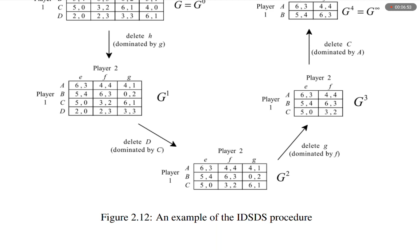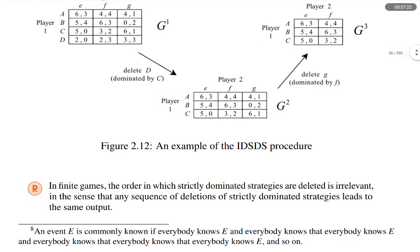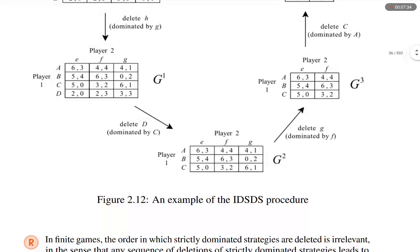We delete D, which is dominated by C. Then we get a 3×3 grid where player 1 has strategies A, B, C and player 2 has strategies E, F, G. The payoffs are: (6,3), (4,4), (4,1); (5,4), (6,3), (0,2); (5,0), (3,2), (6,1). That is G².